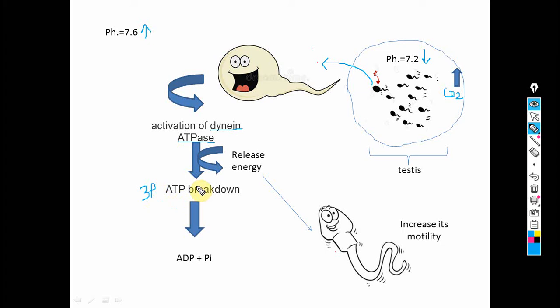Dynein ATPase is the enzyme responsible for breaking down adenosine triphosphate (ATP). ATP contains three phosphates; when broken down it produces adenosine diphosphate (ADP) and one inorganic phosphate. That one phosphate is released in the form of energy, and this energy is taken up by the sperm. The sperm now gains motility — it can now move.